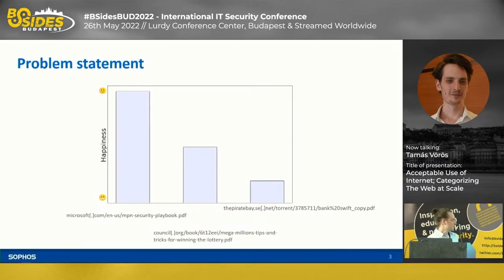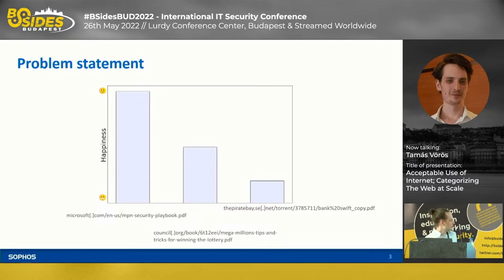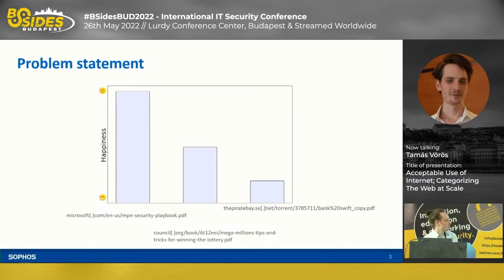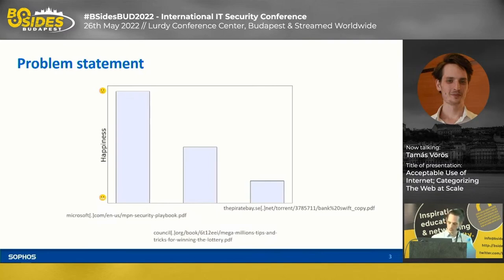The second one is a less known domain — it's called 'tricks for winning the lottery PDF.' I'm not that happy. And finally, I can see in the logs that someone looked up PirateB trying to download a PDF. PirateB is a torrent site, so that's intellectual theft at best. Or maybe that's not even a PDF, so that's how I get ransomware. So as a sysadmin, I will simply block that URL in my firewall or UTM.